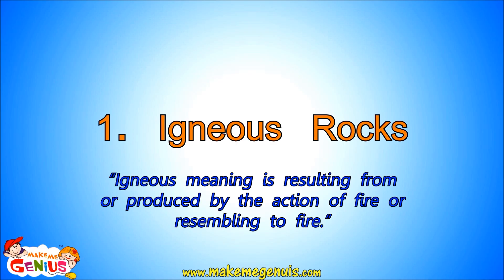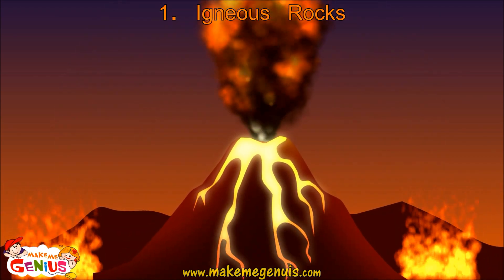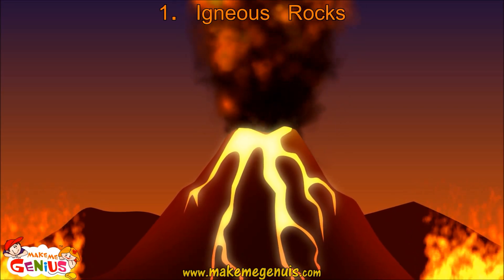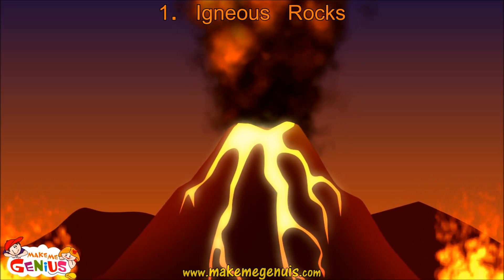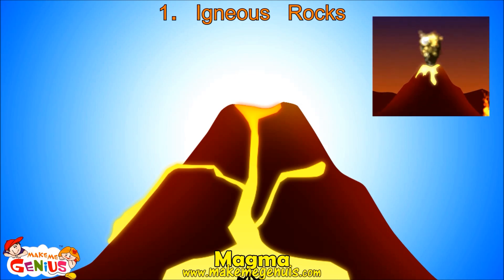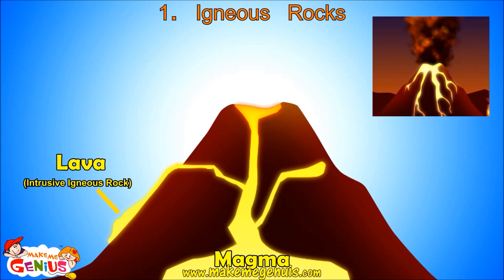To understand igneous rocks, let's first know the meaning of igneous. Igneous means resulting from or produced from fire. To understand it further, let's first understand the volcano. Inside the Earth's core, there are a lot of molten metals and minerals. These melt due to very hot temperatures inside the Earth. The melted material is called magma. It puts a lot of pressure on Earth's surface. Sometimes, Earth's surface breaks and this magma comes out. When it comes out, it is called lava.